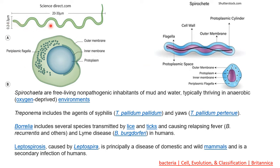This is the spiral structure of a Spirochete, and you can see there are various numbers of flagella present — the number can vary between 2 to 100. Here you can see the axial filament, which we are referring to as the flagella. There is also a periplasmic space, a cell wall, and towards the outer side there is an outer membrane. This is the central protoplasmic cylinder. In a cross-section, you can find the outer membrane, protoplasm, inner membrane, and periplasmic flagella.